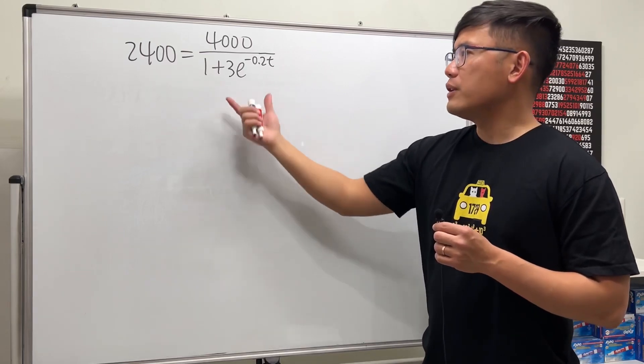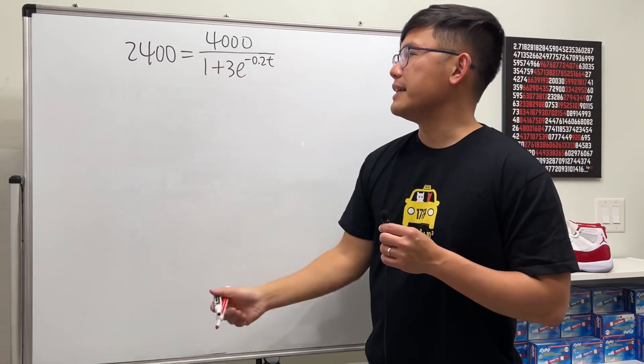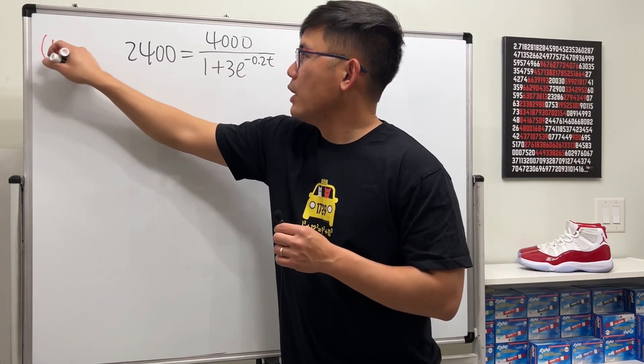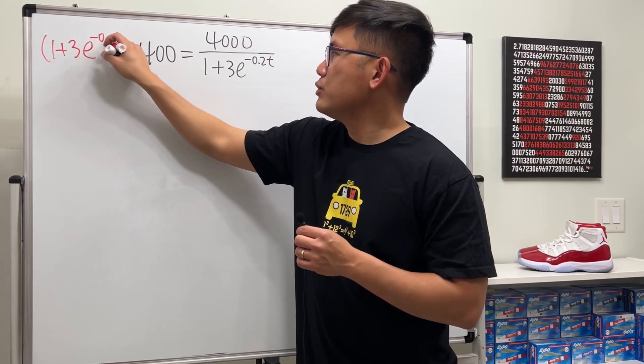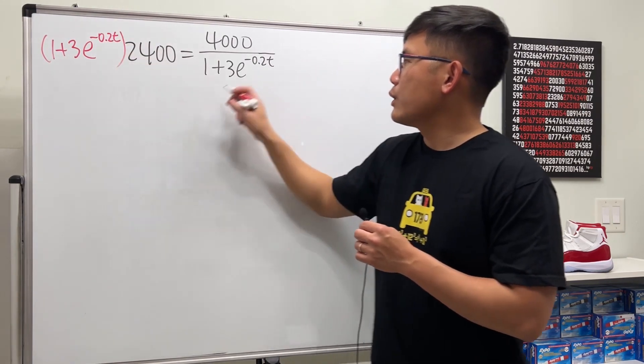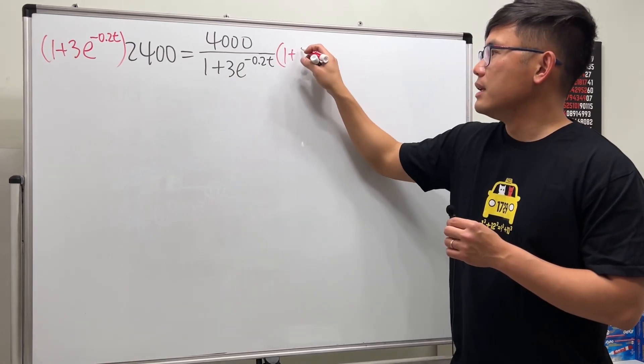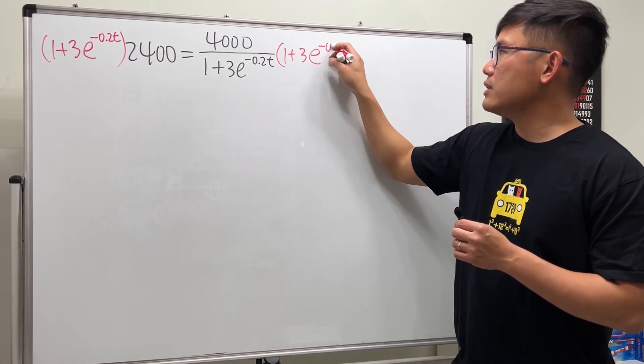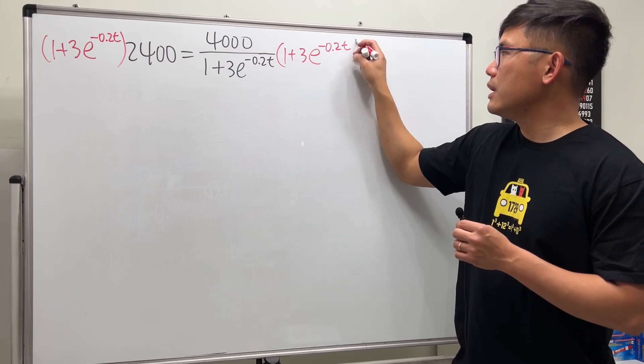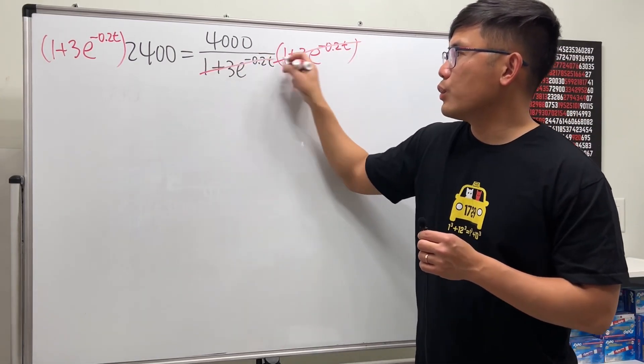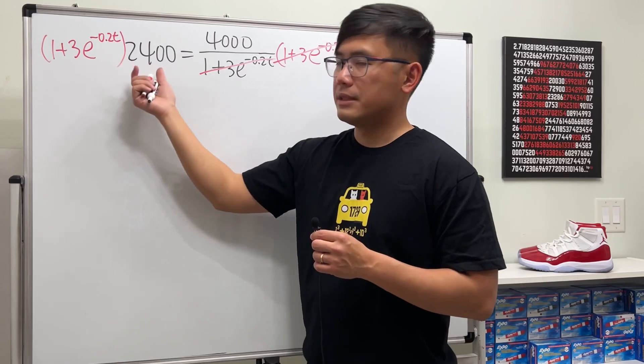First, let's multiply the denominator on both sides. We'll multiply by 1 plus 3 times e to the negative 0.2t, and do the same on the right side. This and that will cancel, which is very nice, and then we have this times that.